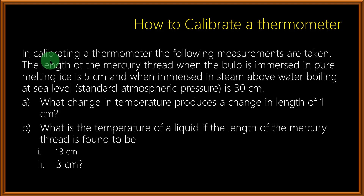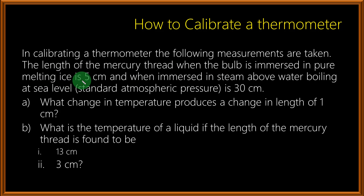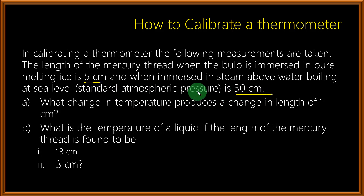We are going to use this question to understand how to calibrate a thermometer. In the question, we are told that in calibrating a thermometer the following measurements are taken: the length of the mercury thread when the bulb is immersed in pure melting ice is 5 cm, and when immersed in steam above water boiling at sea level at standard atmospheric pressure, it is 30 cm. So 5 cm is the length at 0 degrees Celsius, and 30 cm is the length at 100 degrees Celsius.